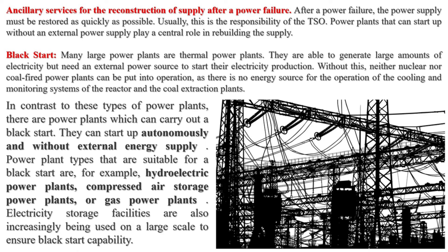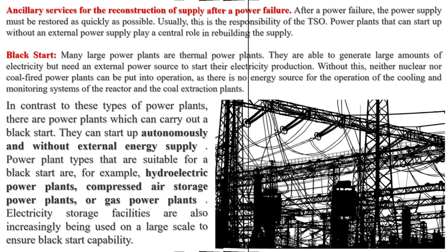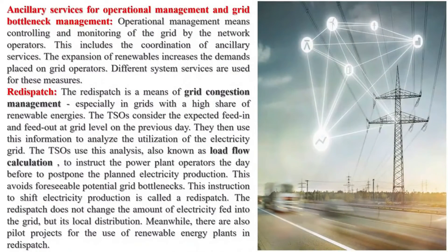Integration of Intermittent Generation: Intermittent renewable energy sources, such as wind and solar power, produce energy that is not constant but varies with environmental conditions. Integrating these sources into the power grid is challenging because it disrupts conventional methods for planning the daily operation of the electric grid. Their power output can fluctuate over multiple time horizons, forcing the grid operator to adjust its day-ahead, hour-ahead, and real-time operating procedures.